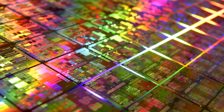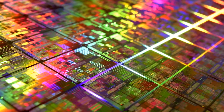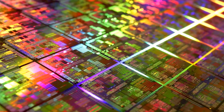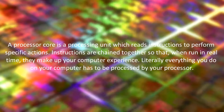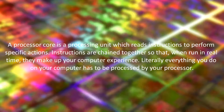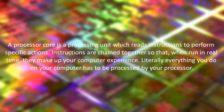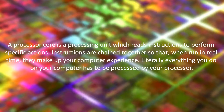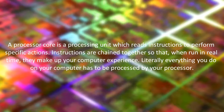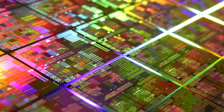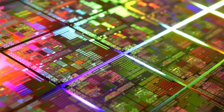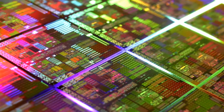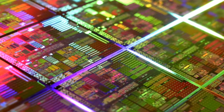All CPUs have one or more cores, with each core being a processor itself. Most commonly, an Intel Core processor will have two physical cores — dual core — and also two virtual cores, which Intel calls hyper-threading. A processor core is the processing unit which reads instructions to perform specific actions. Instructions are chained together so that when running in real-time, they make up your computer experience. Literally everything you do on your computer has to be processed by your processor. The more cores the processor has, the better it runs, and physical processor cores are usually more powerful than virtual ones. The Core i3 range is entirely dual-core, and the i5 and i7 range are all quad-core.